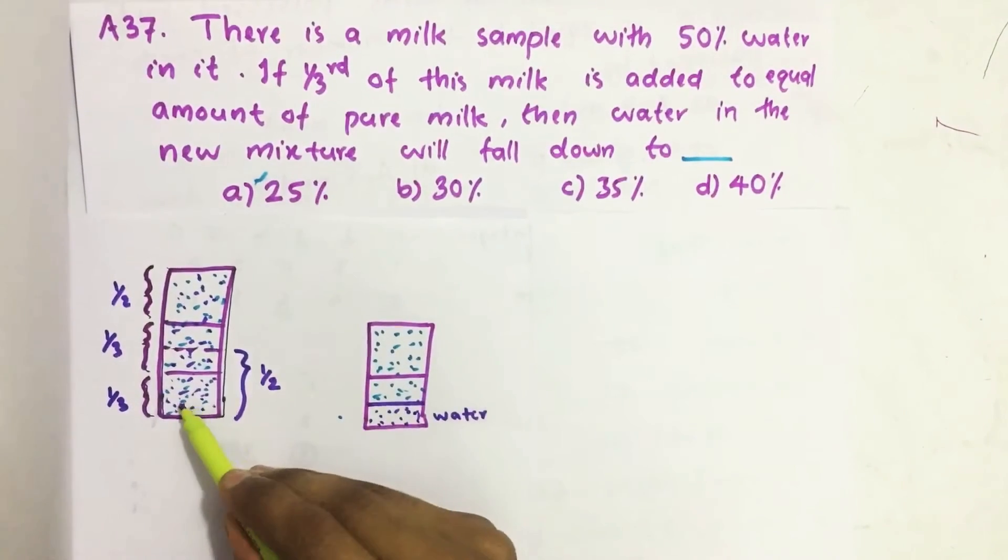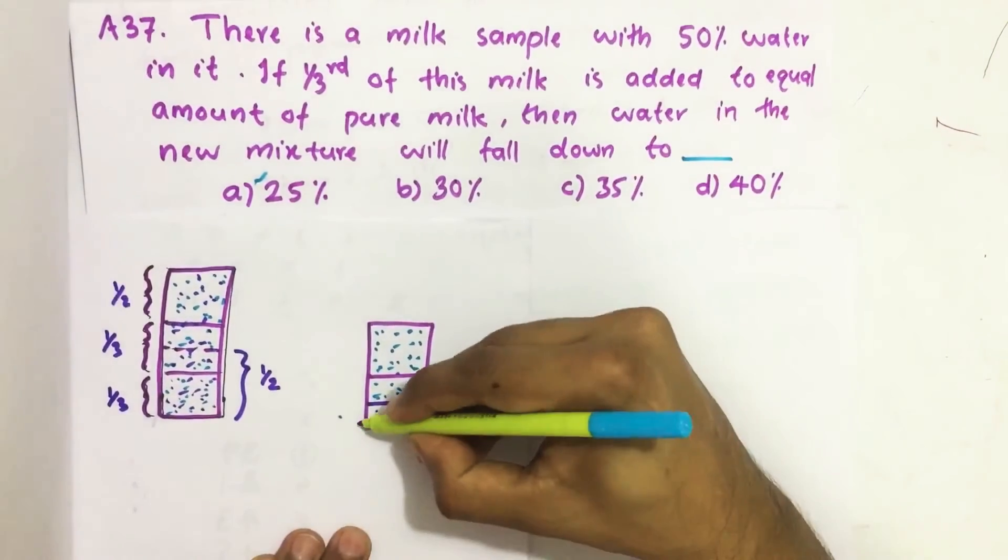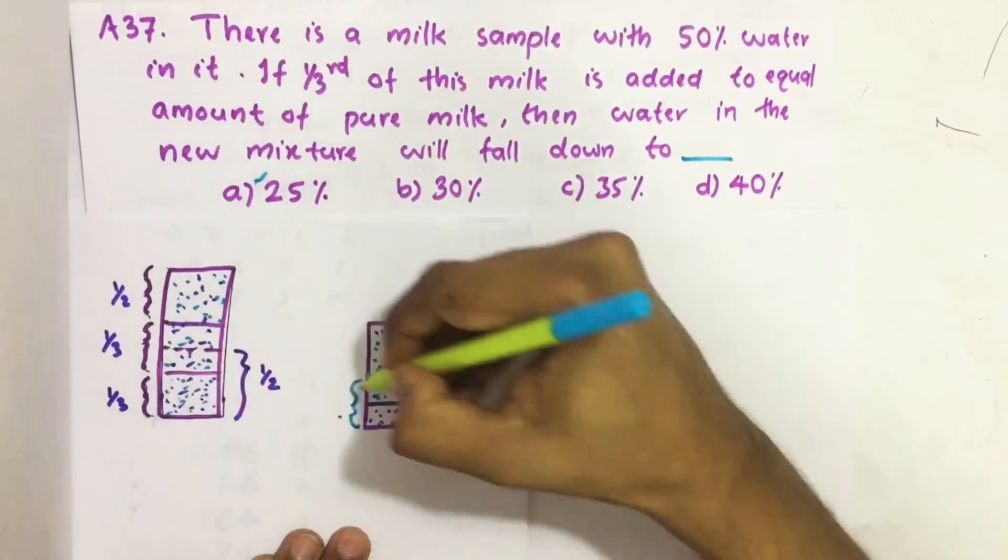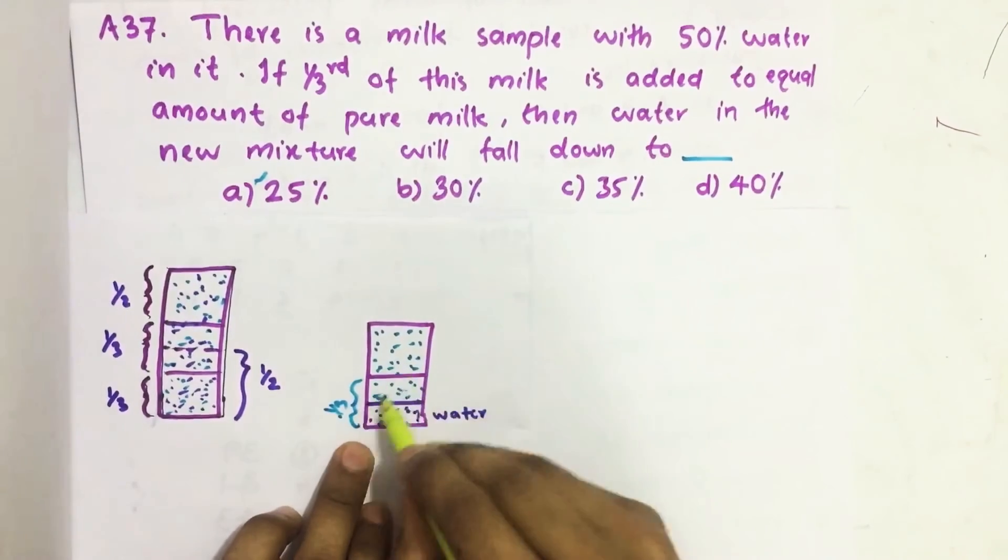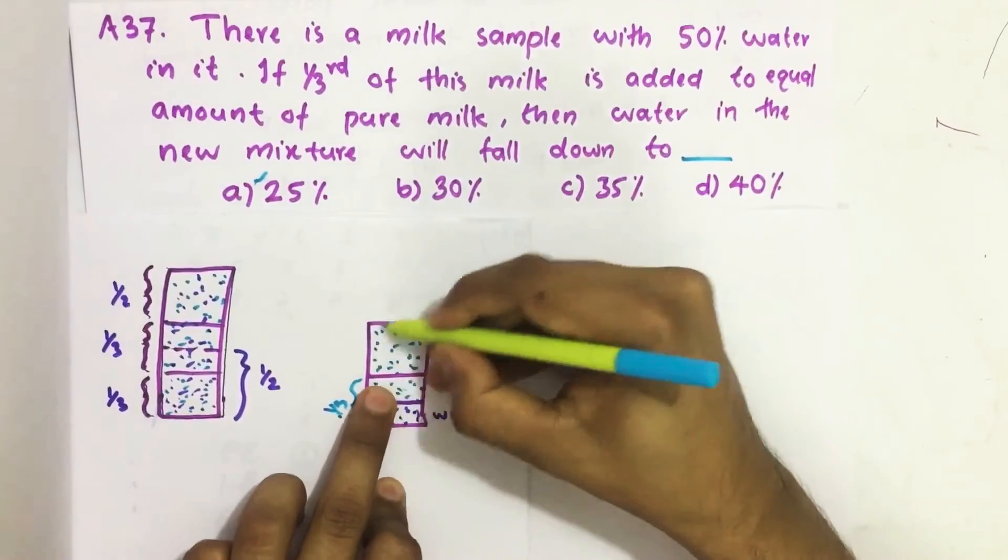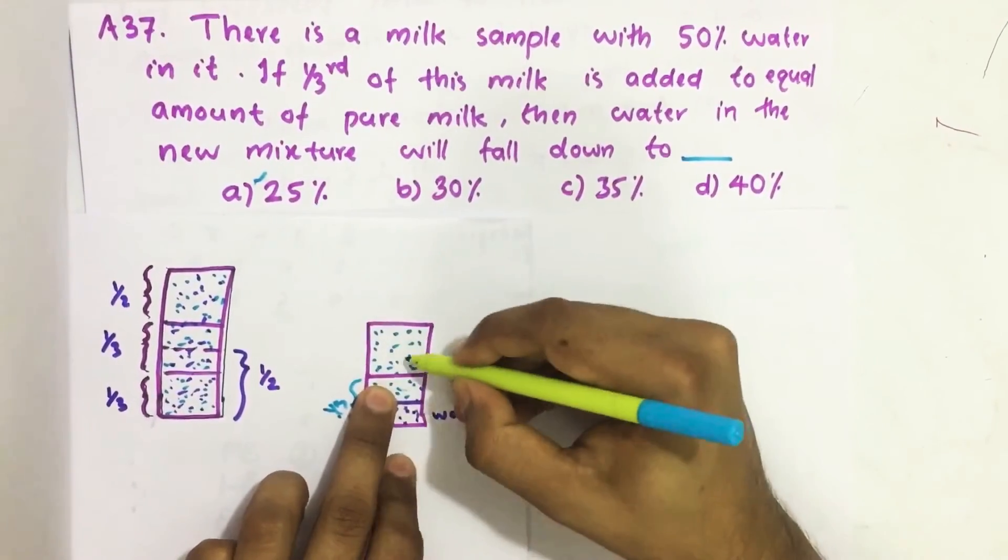So here I took one third of this—this one third which I took from here—and added to this new jar, and the same amount of pure milk also added to this.